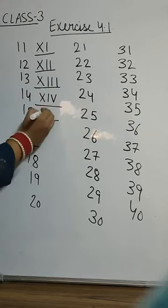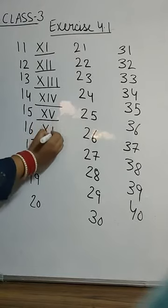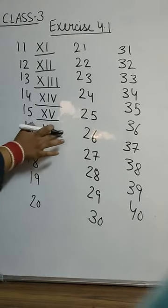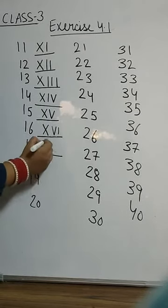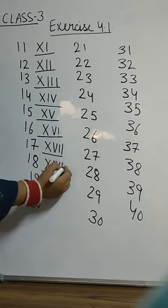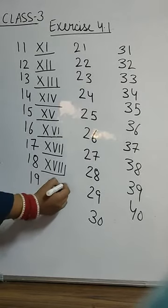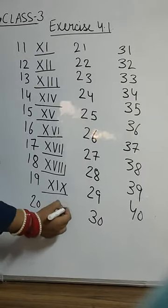What is 15? That is XV. 16, 10 plus 6. That is XVI. It is not IV. IV means 4. VI means 6. What is 17? That is XVII. What is 18? That is XVIII. 19, XIX. 9 means IX. You already know. And 20 means XX.